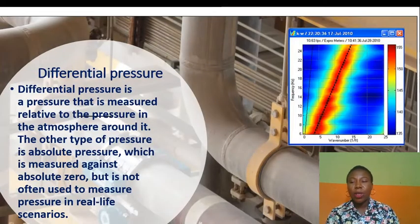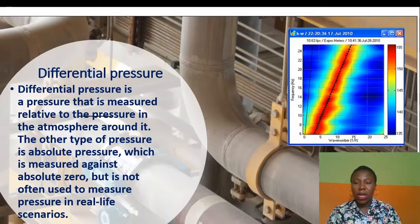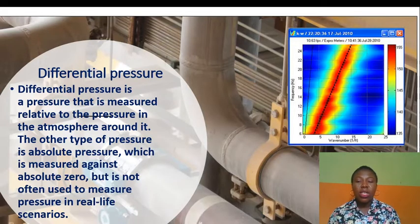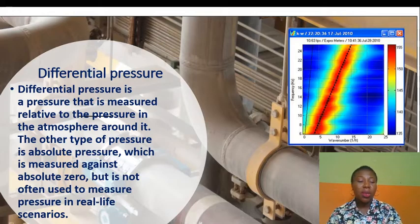Differential pressure is pressure measured relative to the pressure of the atmosphere around it, unlike absolute pressure, which is measured against absolute zero. Differential pressure is not often used to measure pressure in real-life scenarios.